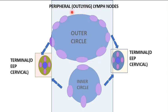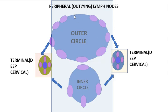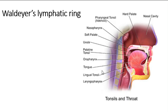With this we have completed the peripheral or outlying lymph nodes, which constituted the outer and inner circles. The outer circle from backward forward included the occipital, mastoid, parotid, submandibular, and submental lymph nodes. The inner circle included the pre-laryngeal, pre-tracheal, paratracheal, and retropharyngeal nodes. Now one thing to mention is the presence of Waldeyer's lymphatic ring.